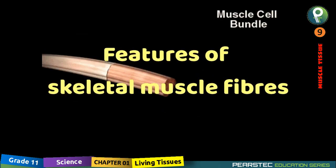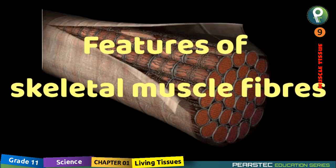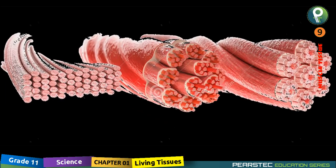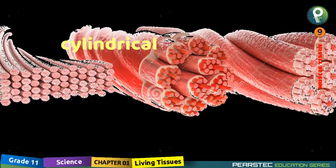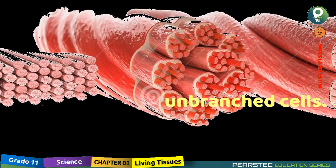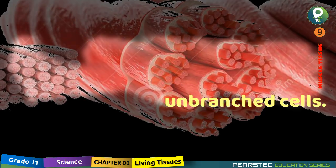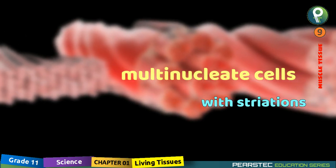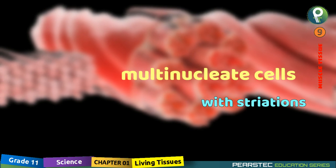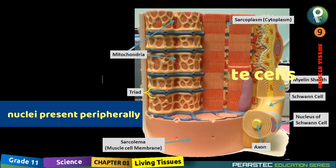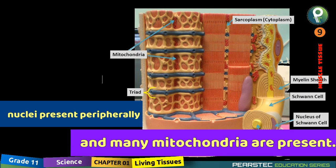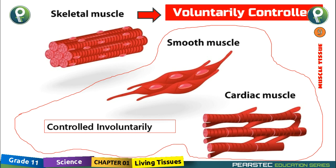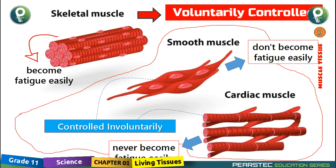Let's understand the features of the skeletal muscle fiber. Skeletal muscle fibers are long, cylindrical, unbranched cells. They are multi-nucleate cells with striations. The nucleus is present peripherally, and many mitochondria are present. These cells are voluntarily controlled and become fatigued easily.